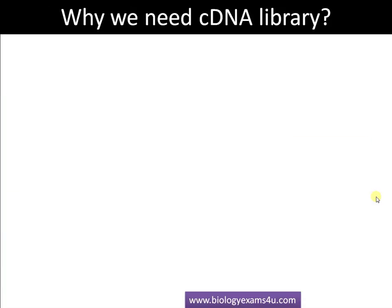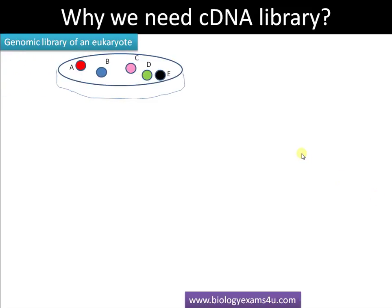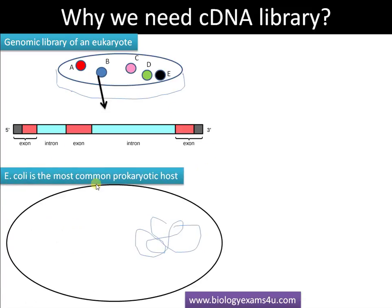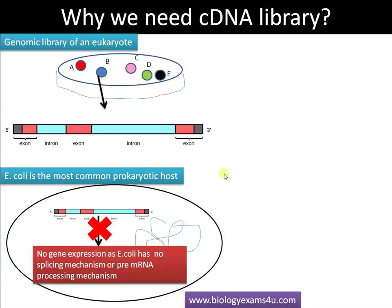Now, we have a genomic library — what is the advantage of having a cDNA library over a genomic library? In a genomic library of a eukaryote, colonies A, B, C, D, E each contain a specific gene or DNA fragment. The DNA inserted in these colonies contains both exons and introns. For expression, we commonly use E. coli, the most common prokaryotic host. However, if we use a genomic library, the gene will have both introns and exons, but the prokaryotic host does not have a mechanism to splice out introns and join exons.